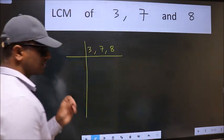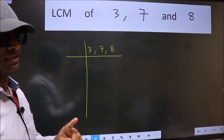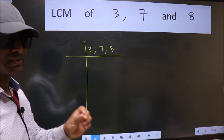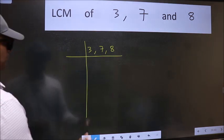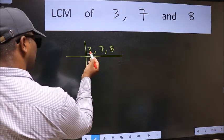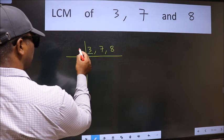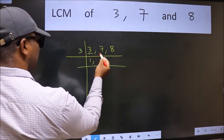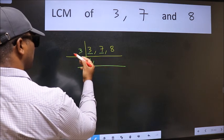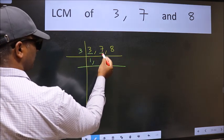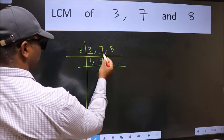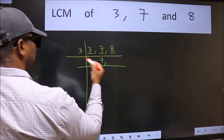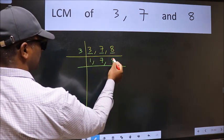This is your step 1. Now we should focus on the first number, which is 3. 3 is a prime number, so 3 divides by 3. The other number 7 is not divisible by 3, so we write it down as it is. The other number 8 is not divisible by 3, so we write it down as it is.